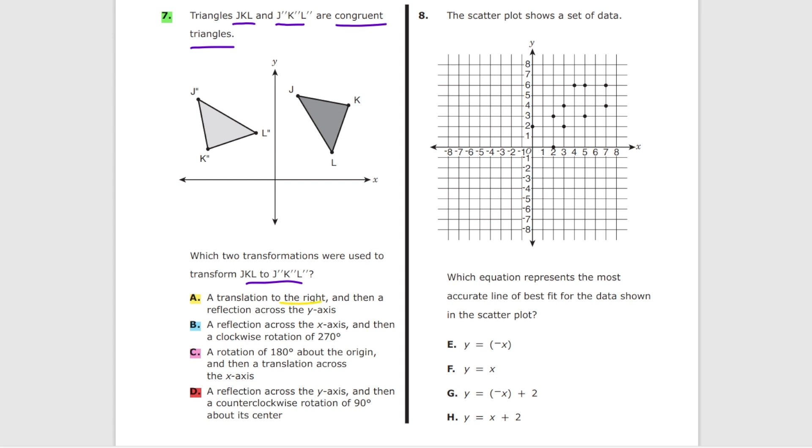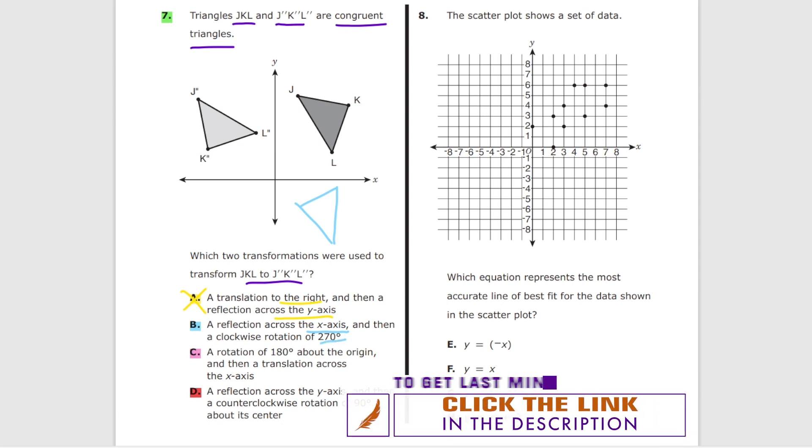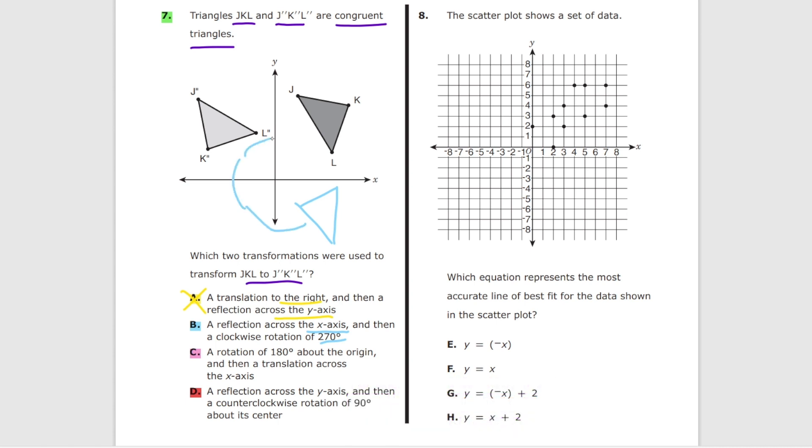A: a translation to the right so we move this triangle somehow to the right like that and then a reflection across the y-axis. So clearly it's not gonna work because it's gonna look like this, right? So A is not the right answer. Option B, a reflection across the y-axis so it's gonna look like this somehow like this and then a clockwise rotation of 270 degrees. So clockwise goes like this, like 90 degrees, 180 degrees, and then 270 degrees. So we just move to the same quadrant somewhere here which is clearly wrong so B is also not the right answer.